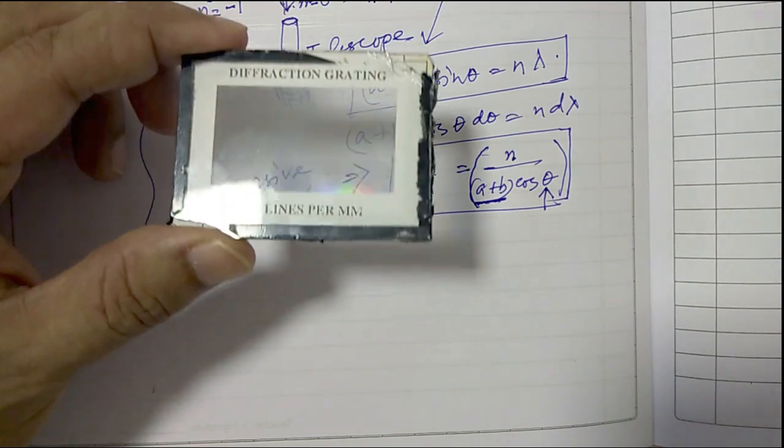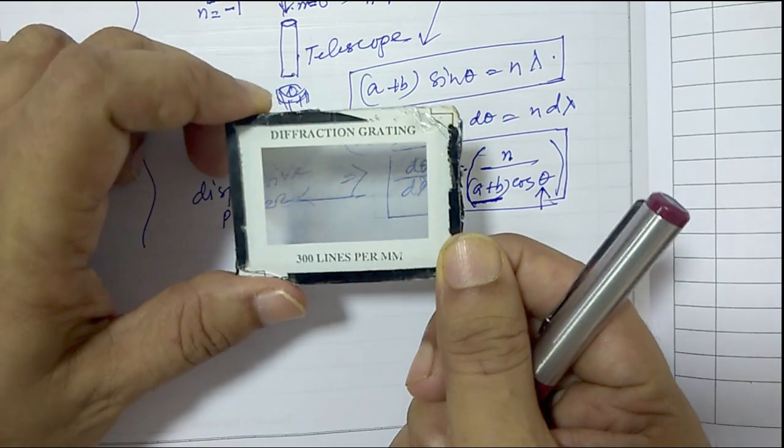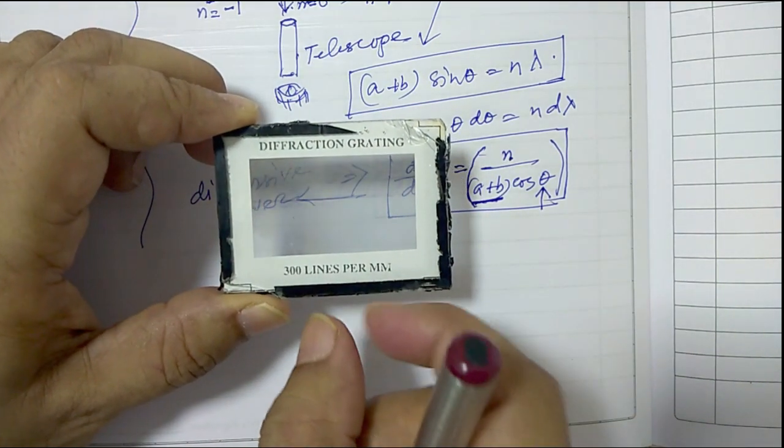In our experiment, we have diffraction due to transmission. So again, coming back, how do we calculate the grating element?